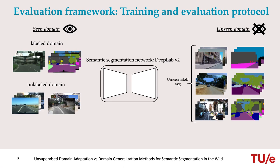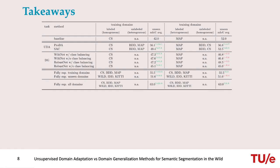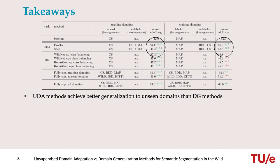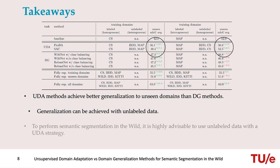The main takeaway of our work is that unsupervised domain adaptation methods achieve better generalization to unseen domains than domain generalization methods. This result also means that generalization capacity can be improved by using unlabeled data, and for this reason, to perform semantic segmentation in the wild, it is highly advisable to use an unsupervised domain adaptation strategy that exploits unlabeled data, which is easier and cheaper to collect. For more in-depth analysis, we invite you to read our paper. Thanks for listening.